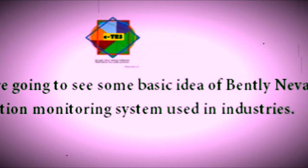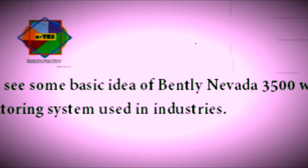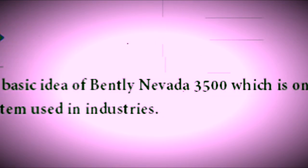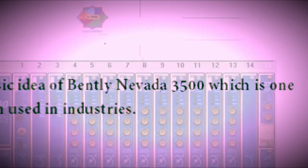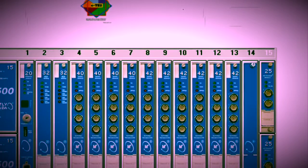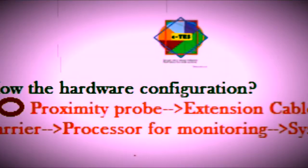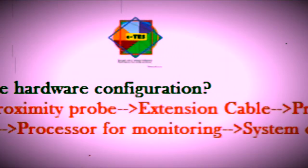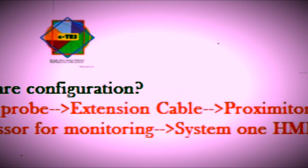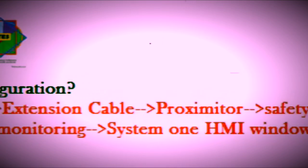The hardware configuration of this system: the probe is connected with an extension cable, then it is connected to the proximitor, then to the safety barrier, then to the processor for monitoring, and then it is connected to the System 1 HMI.